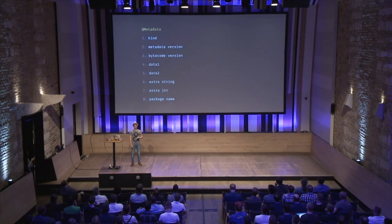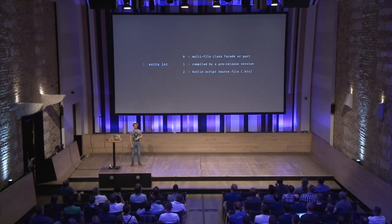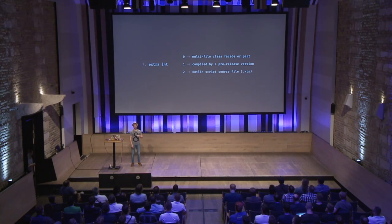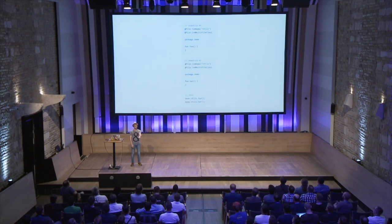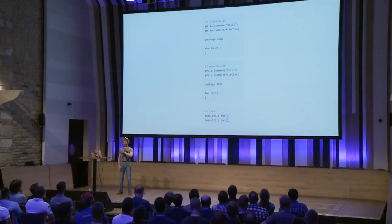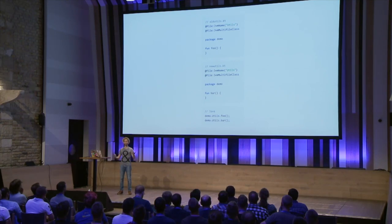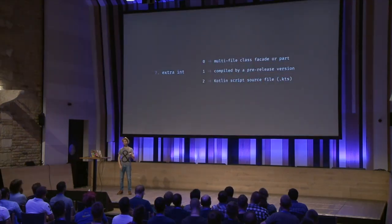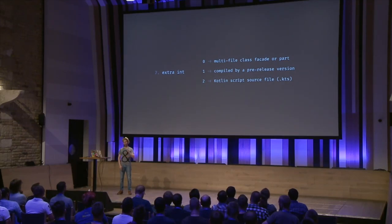Then we have the extra int, which is like a sort of enum — actually a flag, so it can be multiple values. It can indicate a multi-file class facade or part: a way to have different files annotated with the same JVM name, merged into a single Java file so you can access everything from one place. It can also tell you if something was compiled by a pre-release version of Kotlin, and whether this is a script, because again there's no way to know just from the bytecode.